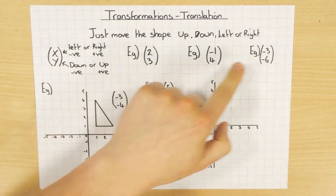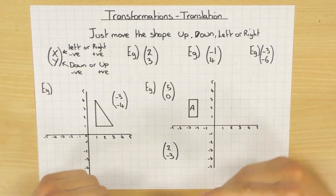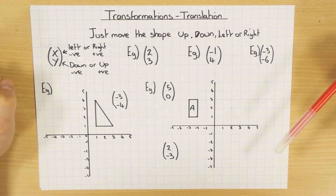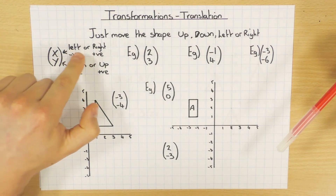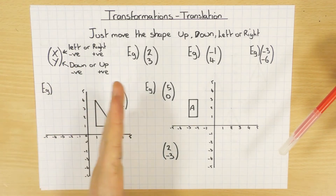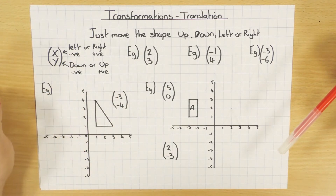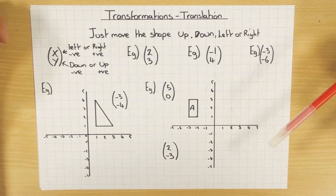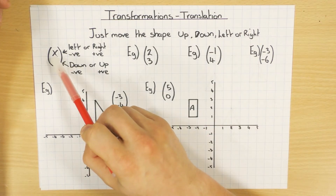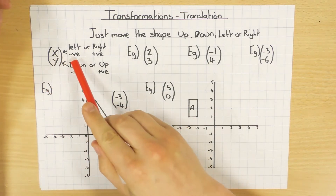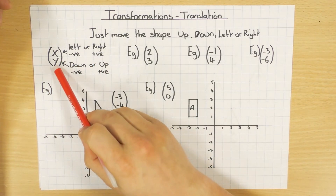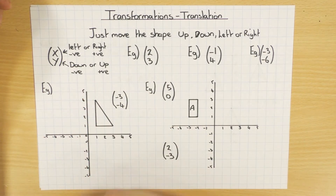These are all column vectors — there's a number at the top and a number at the bottom. The top number is the x value, and that tells you whether it goes left or right, because if this is the x-axis, you can go left or right. The bottom number tells you whether you go up or down, in reference to the y-axis. If the top number is negative, you go left; if it's positive, you go right. If the bottom number is negative, you move the shape down; if it's positive, you move the shape up.